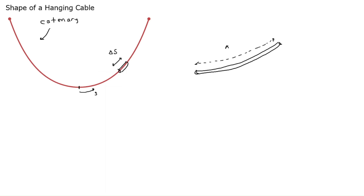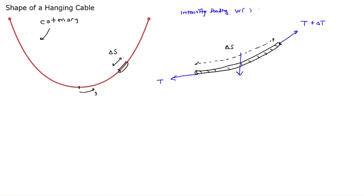Let's do some statics analysis. Here's our cable element — it's got just a slight little curve to it. Cables contain tension forces, so let's draw a free body diagram. I'll call the tension at the lower left T, and at the upper right T plus delta T, since we're supporting some weight. The weight we're supporting is the weight of this cable element itself — represented by an intensity loading W as a function of arc length S, which is force per unit length.